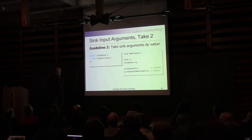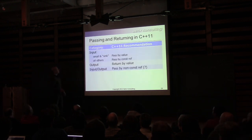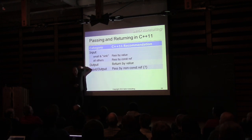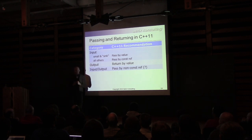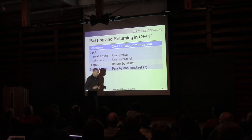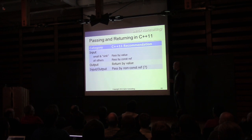So here's what we have so far. Input parameters: small and sink — passed by value; all others — passed by const ref. Since we have cheap-to-move types, output parameters should be returned by value. For in-out parameters, we haven't said much yet — pass by non-const ref — but that's unsatisfying because it hurts composability.